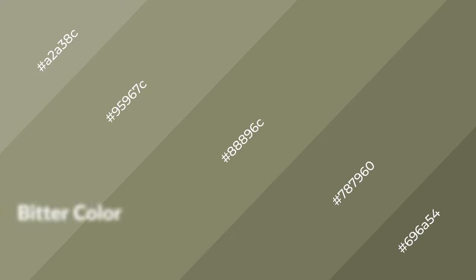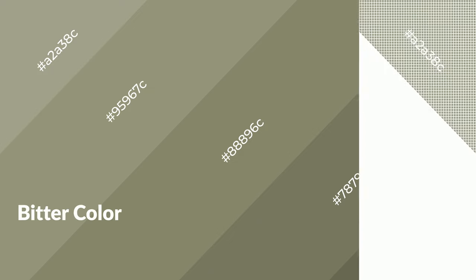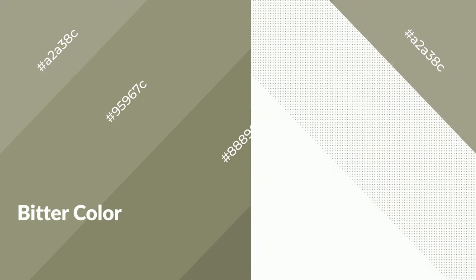Shades are used in patterns, 3D effects, and layers, and they create depth and drama. Bitter is a warm color and it emits cozier and active emotion. Warm colors are symbols of warmth, fire, heat, and sunshine.